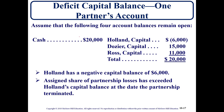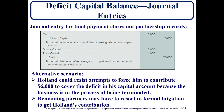Looking at this balance sheet, Holland — who has a 40% interest — has a deficit balance. We have $20,000 of cash but we're unable to distribute it to Dozier and Ross because their capital balances exceed the available cash, and we can't collect from Holland. In the first scenario, Holland is available and will pay the $6,000. That increases our cash account to $26,000, and then we can close out Dozier's and Ross's capital balances and distribute the cash to them.